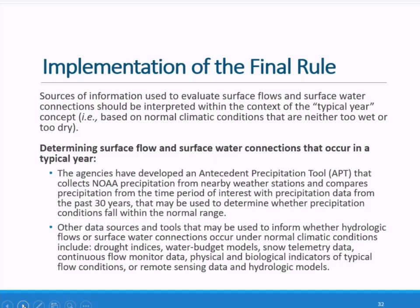A variety of tools and datasets are available to ensure that sources of information used to evaluate surface flow and surface water connections are based on conditions that are neither too wet nor too dry. For example, the agencies have developed an antecedent precipitation tool, APT, that collects NOAA precipitation from nearby weather stations and compares precipitation from the time period of interest with precipitation data from the past 30 years. The agencies will generally use the APT to inform whether weather observations or other evidence of surface water flow occurred during times when precipitation conditions fall within the normal range.